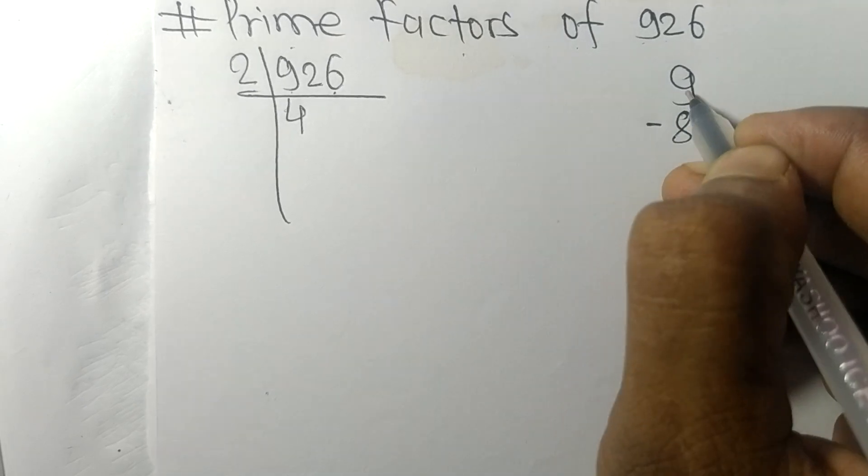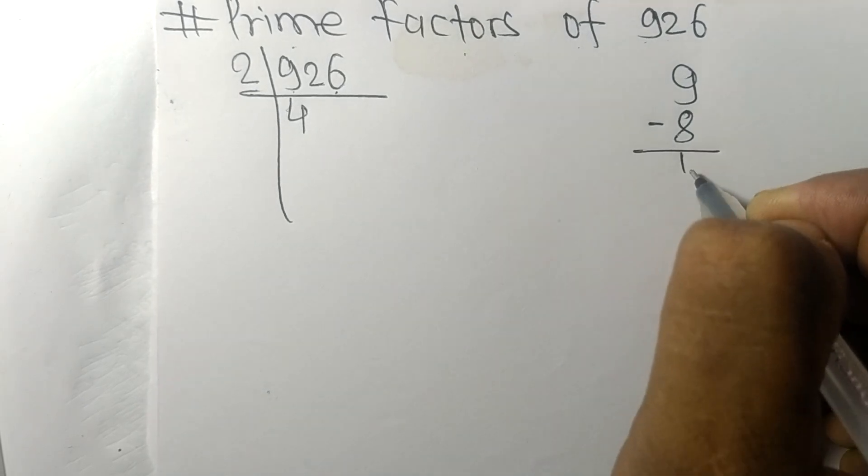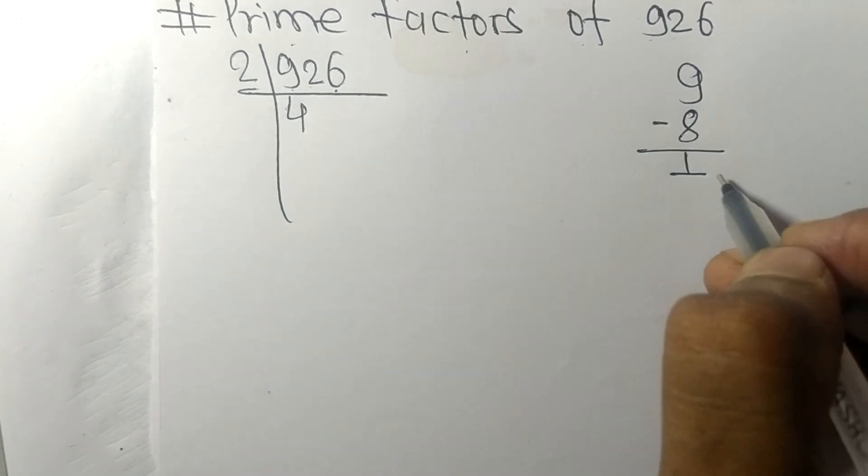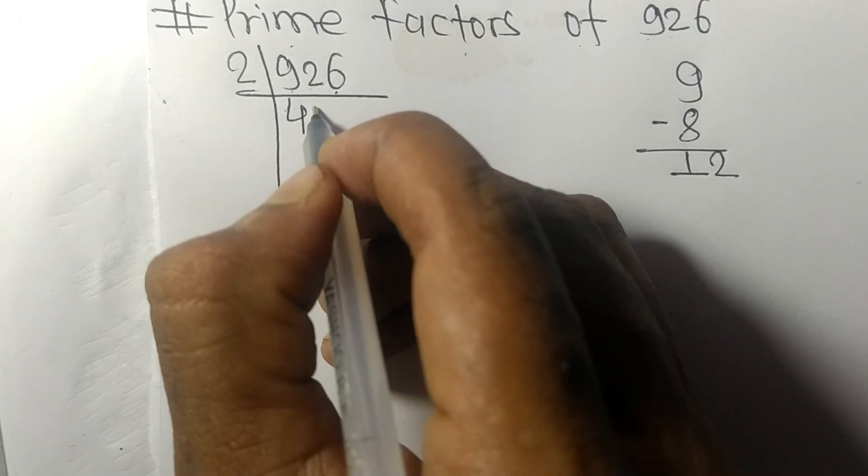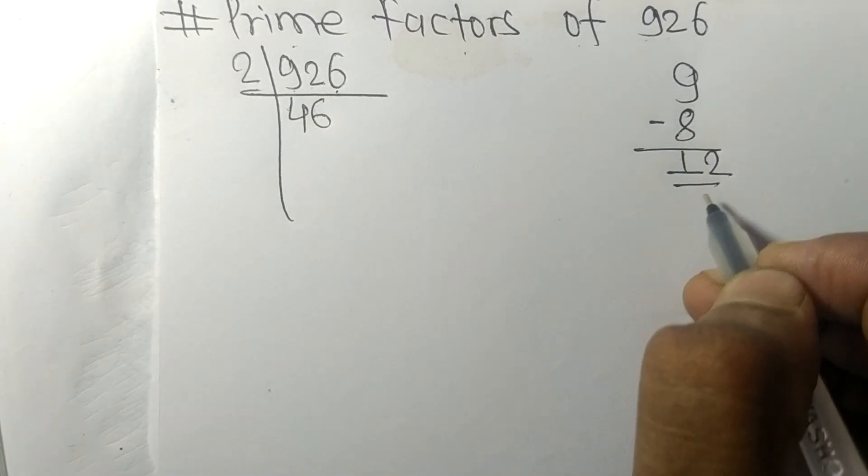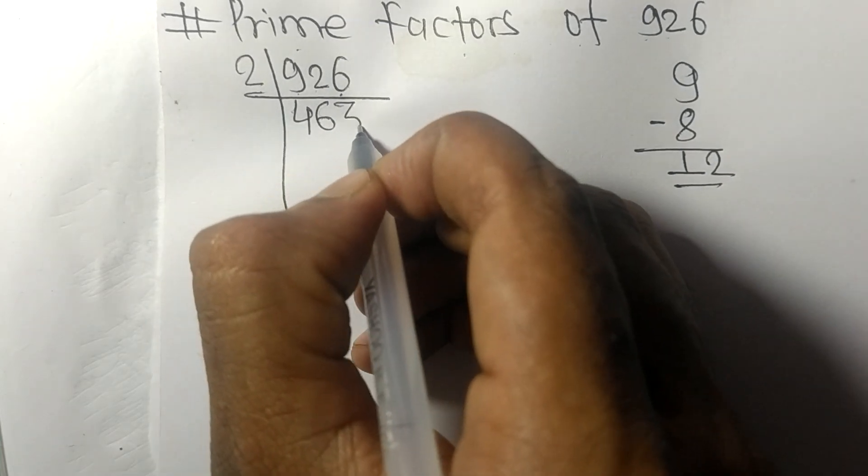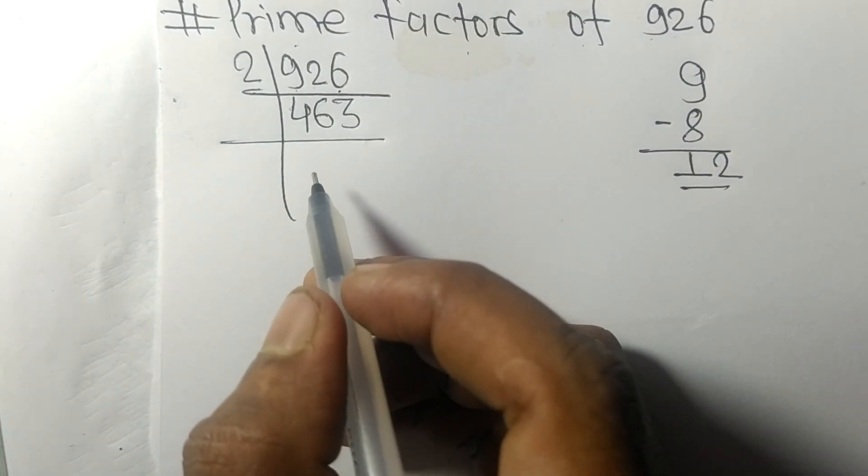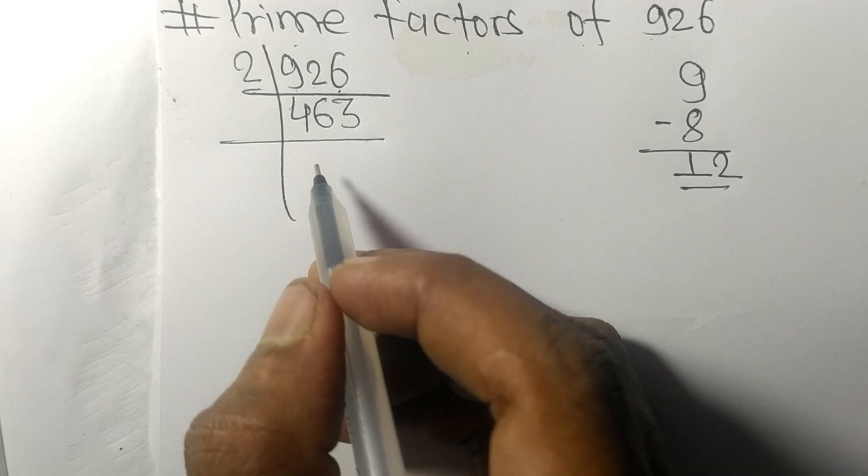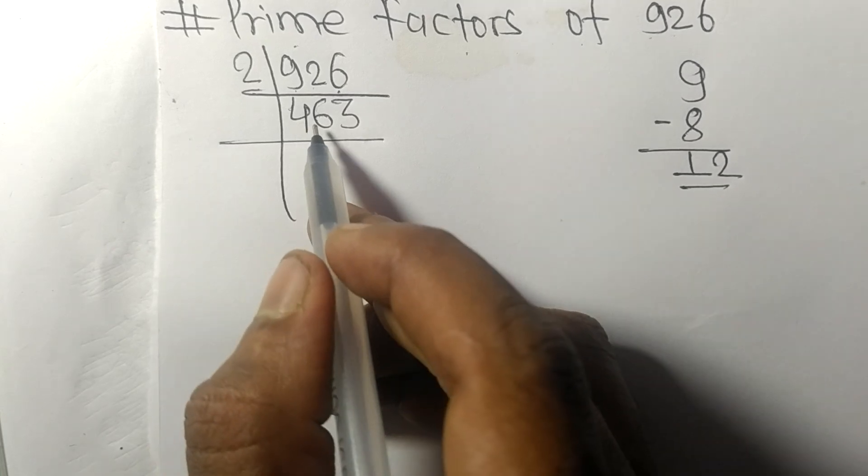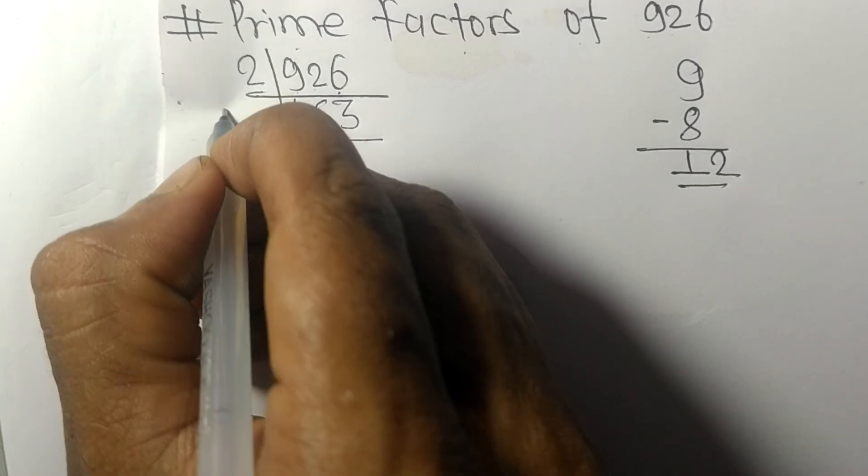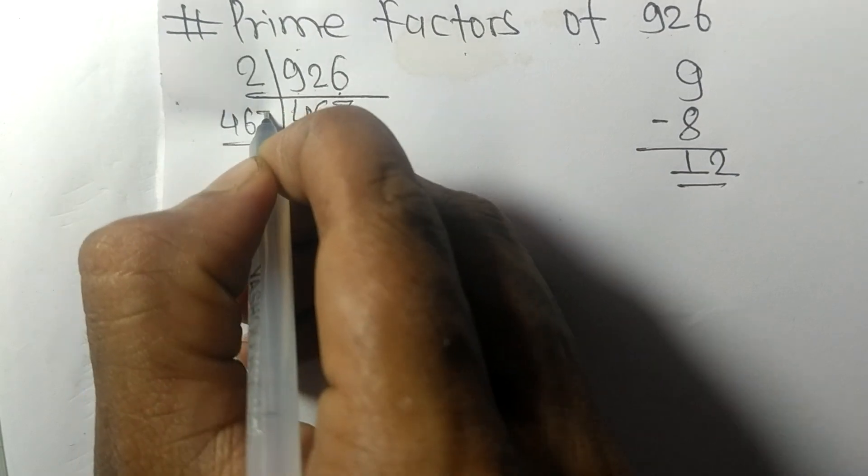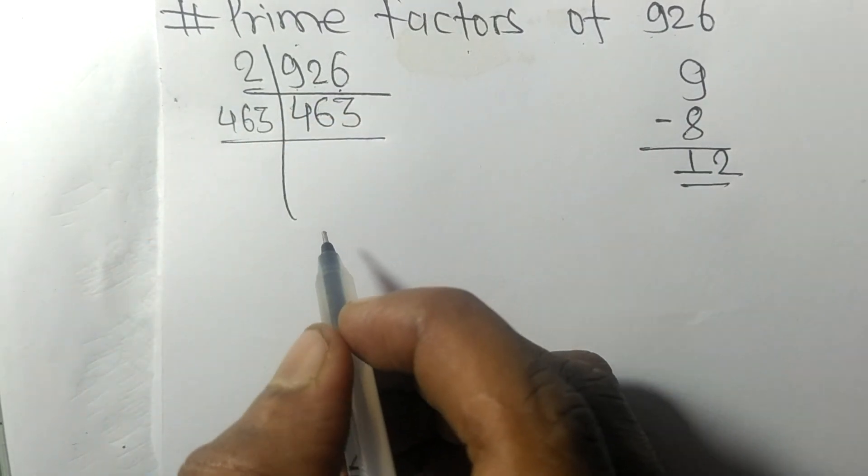means 8. On subtracting we get 1, then 12. 2 times 6 means 12, and 2 times 3 means 6. Now we got 463, which is a prime number, so it is exactly divisible by 463 only.